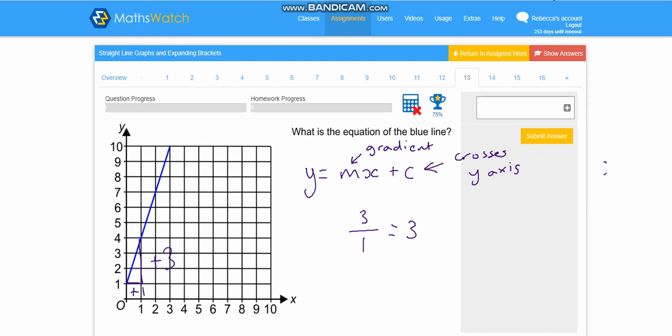So, so far, we know that y equals 3x. And the last bit's nice and easy. We've just got to figure out where does the line cross the y-axis. Well, it crosses it here, which is a positive 1. So that's our answer. Okay, y equals 3x plus 1. So that's how you work out the equation of a straight line on a graph.